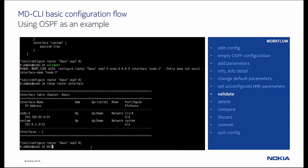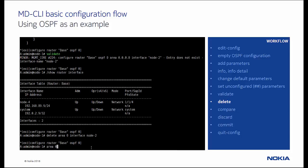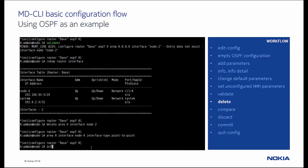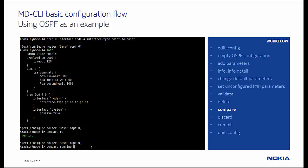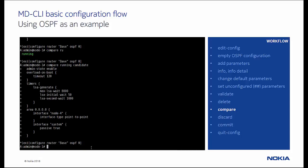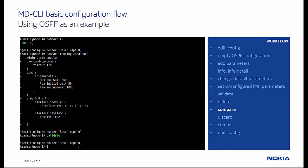So let's delete interface node2 using the delete command, then add the correct interface. Before we validate, let's compare the running configuration with the candidate configuration using the compare command. Notice the plus sign in front of the newly added configuration parameters. The validation is now successful, since no errors are returned.